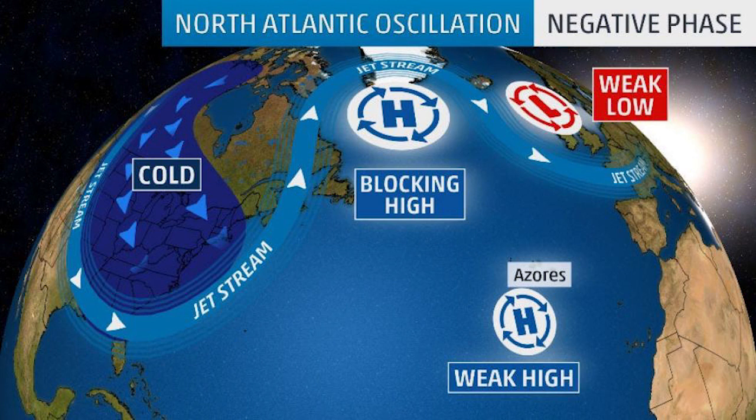The first thing you need to know is that there's a permanent low pressure system located over Iceland and a permanent high pressure system located over the Azores, which is a chain of islands. They're called the Icelandic Low and the Azores High. What changes with these is the location and the strength fluctuate quite a bit — and this is actually what the NAO is: the North Atlantic Oscillation is the location and strength of the Azores High and the Icelandic Low.